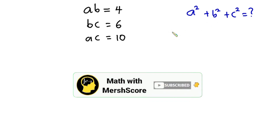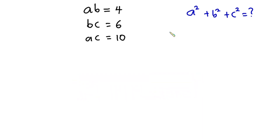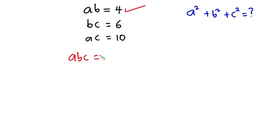Now let's get started. First, let's compare these equations to this one. If we compare the first equation to this one, you can see that this equation lacks c. So let's introduce c by multiplying through, so we have abc is equal to 4c, and I'll call this equation one.